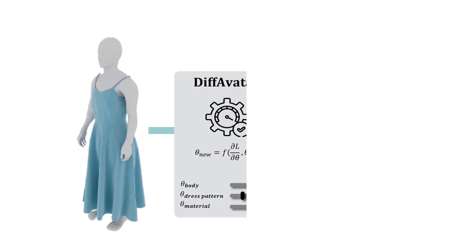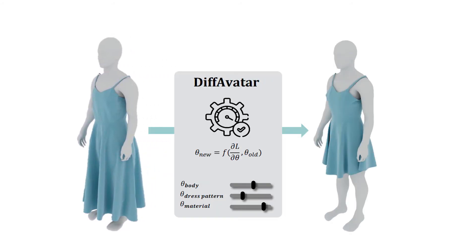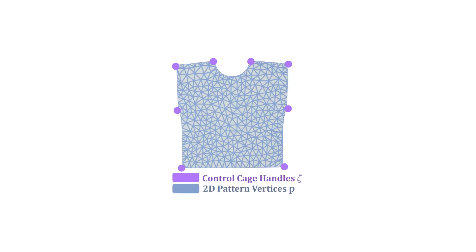Our computational method then co-optimizes the body shape, pose, cloth material, and garment pattern simultaneously to closely match the observed data. Each individual panel in the pattern will be optimized, leveraging our proposed control cage formulation, which adapts to size and shape by optimizing automatically selected control points on the boundary.